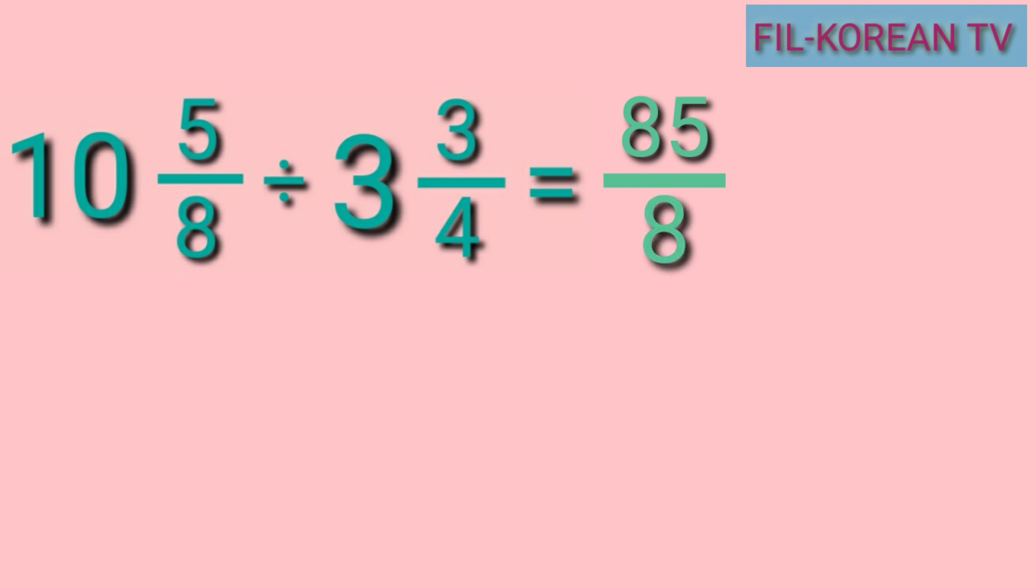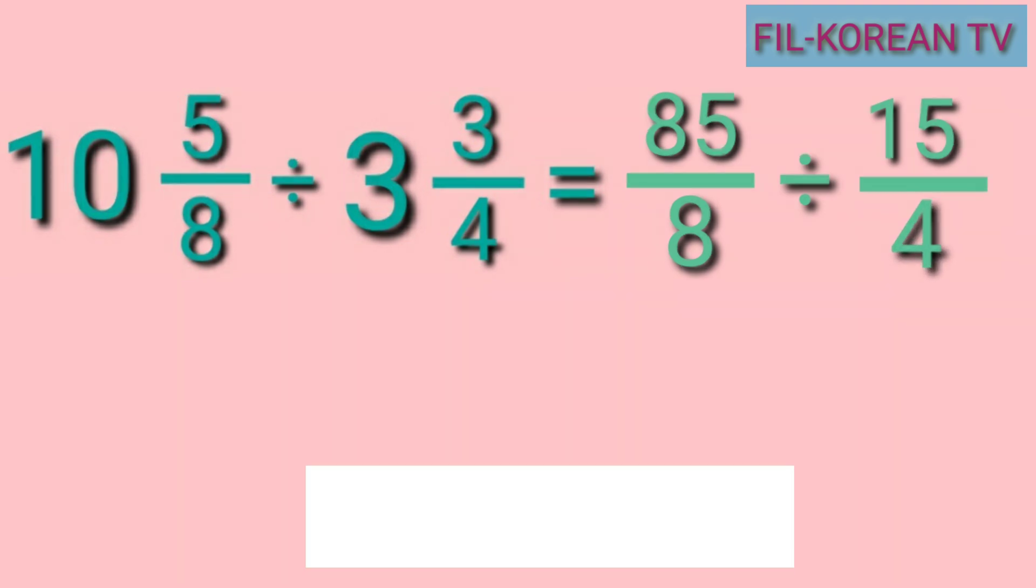Next, let's do the same for the divisor. 4 times 3 equals 12 plus 3 equals 15. So 15 is the new numerator of the divisor, and then we will copy the denominator 4. They are both improper fractions now. 10 and 5 eighths becomes 85 eighths, and 3 and 3 fourths becomes 15 fourths.